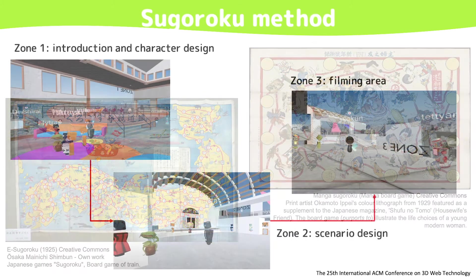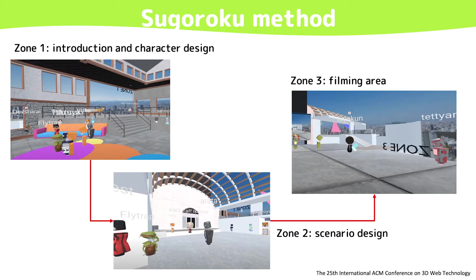We designed the virtual environment into three zones: Zone 1, introduction and character design; Zone 2, scenario design; Zone 3, filming area. Once each step was completed, kids moved to the next zone. To advance to the following zones, kids had to finish the zone they were in.